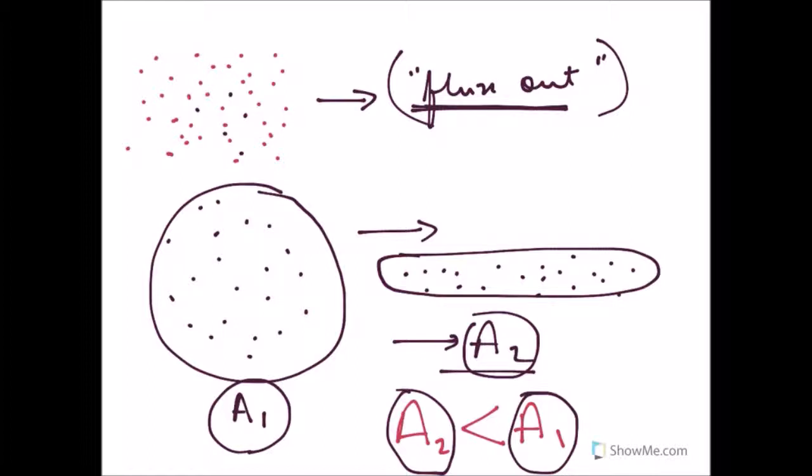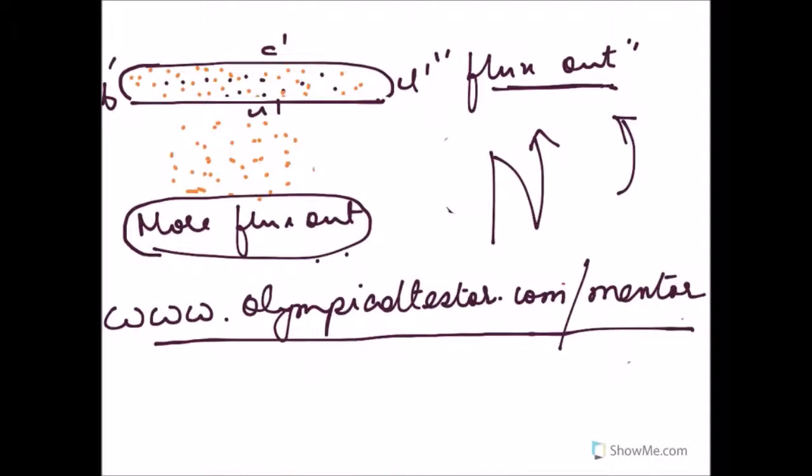So once the shape from circular loop is changed into this narrow wire, area A1 changes to area A2, and as we see A2 is less than area A1, and hence the flux out decreases. Hence the direction of current in the new shape A dash B dash C dash D dash should be such as to counter this decrease of flux out.